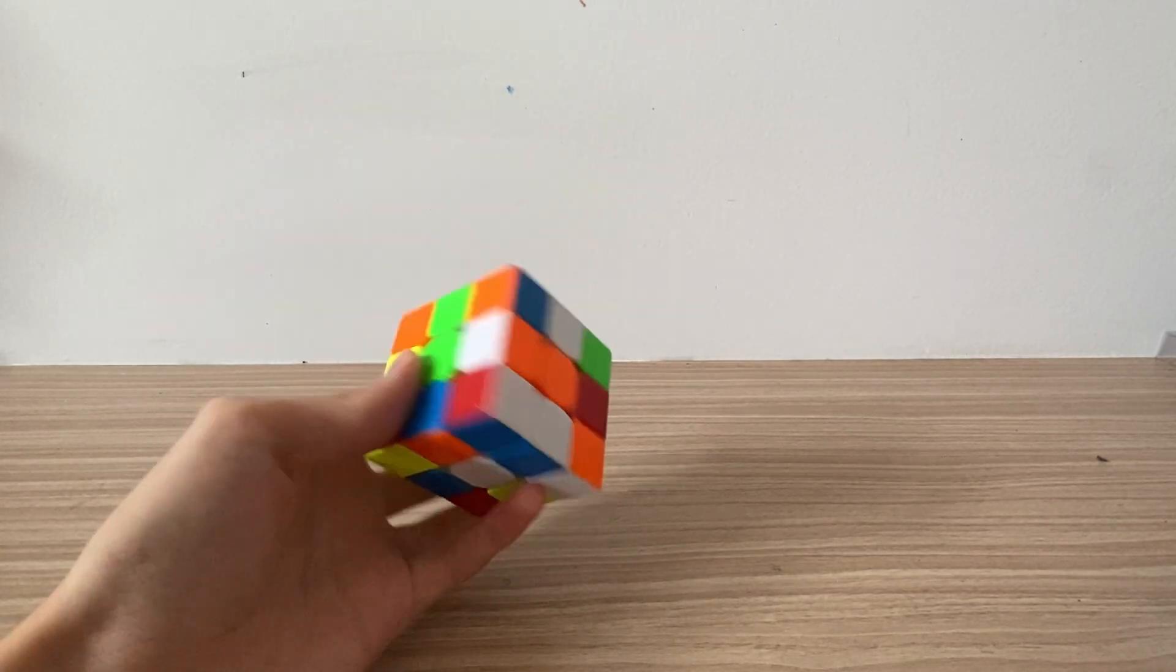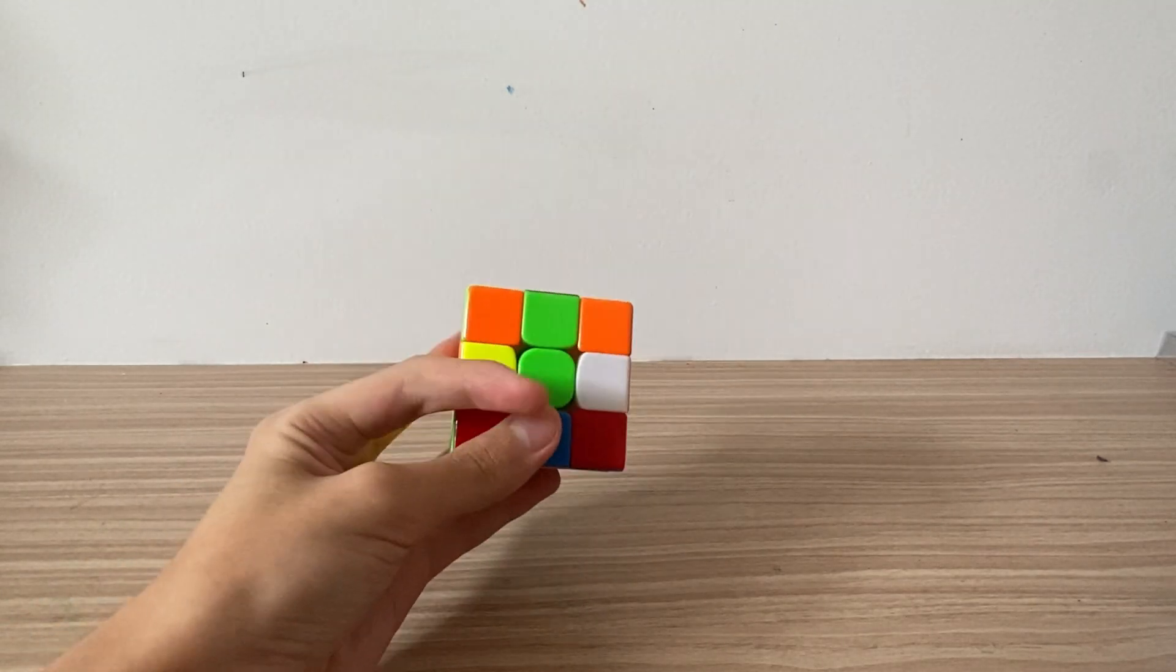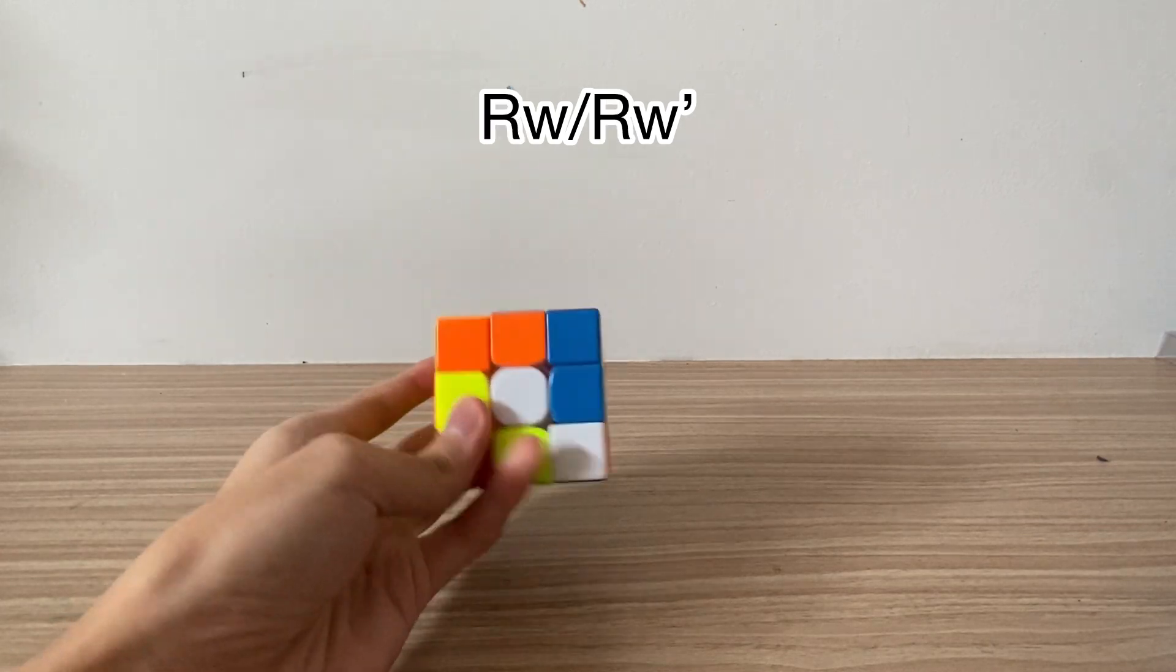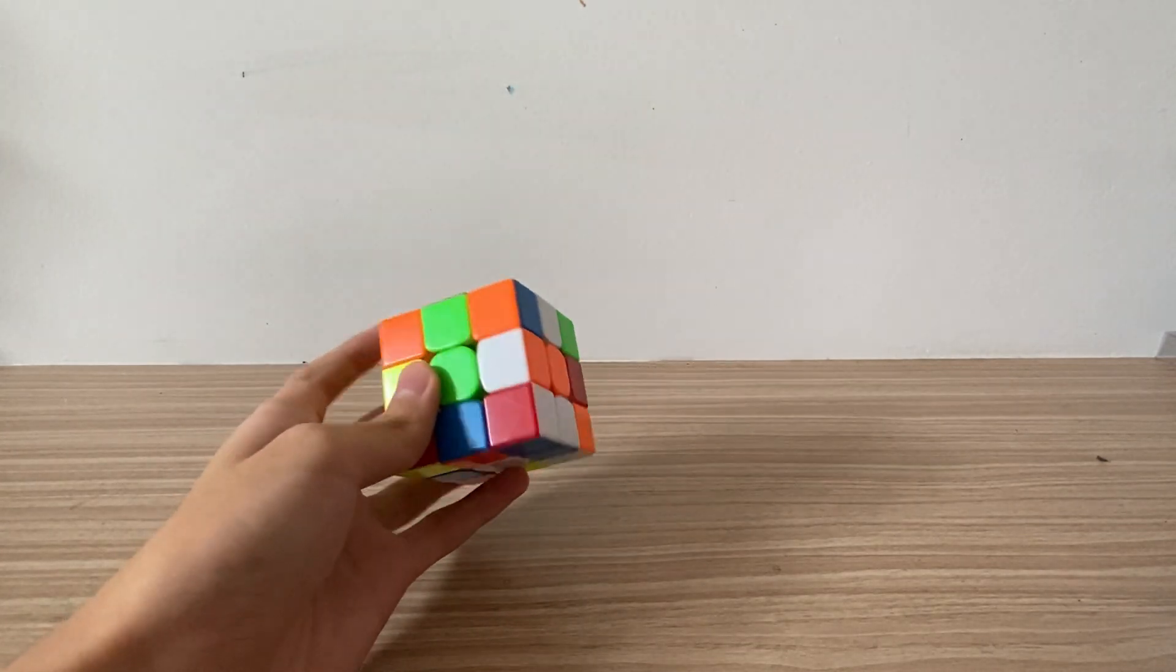Number one, solving the cross. So for cross, we can use more U moves or R Y moves so that we can make more efficient moves.